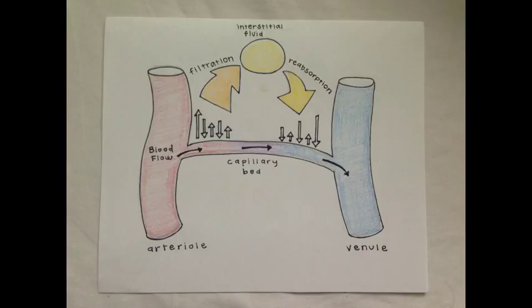The fifth and last type of capillary pressure is interstitial colloid osmotic pressure, which is a force exerted by protein molecules within a tissue's interstitial fluid. This pressure is normally very low. Interstitial fluid is the liquid found between the cells of the body that provides much of the liquid environment contained within our bodies.